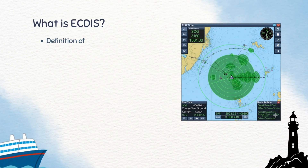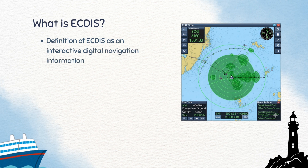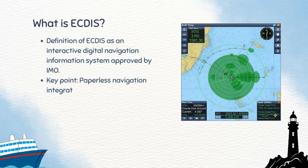Let's start with the basics — what exactly is EGDIS? EGDIS stands for Electronic Chart Display and Information System. It's an interactive digital navigation tool approved by the IMO, offering fully paperless navigation by integrating electronic charts, position fixing, and shipboard sensors. In other words, EGDIS lets us monitor a ship's journey in real time, streamline passage planning, and respond quickly to navigational hazards.